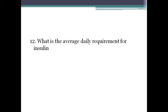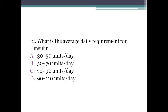Next question: what is the average daily requirement for insulin? Option A: 30 to 50 units per day. Option B: 50 to 70 units per day. Option C: 70 to 90 units per day. Option D: 90 to 110 units per day. The right answer is option A, 30 to 50 units per day.